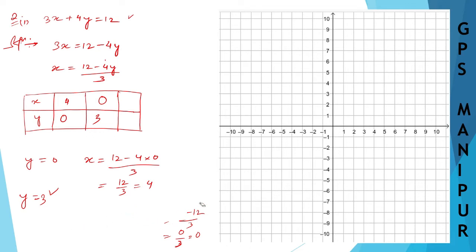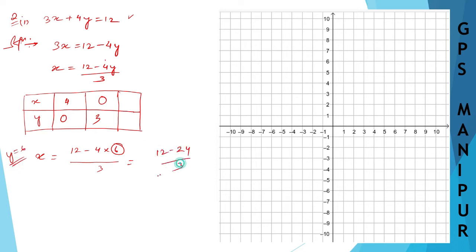Let me find out another number. Let us try with y equal to 6. 12 minus 4 into 6 divided by 3. Then 12 minus 24 divided by 3, minus 12 divided by 3, 3 times 4 is 12. So if you take y equal to 6, x will be minus 4.